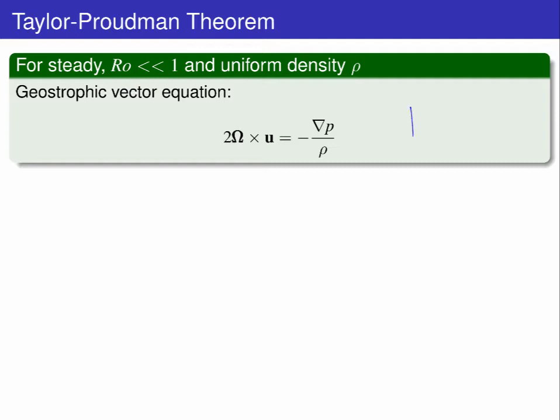Consider the flow to be rotating such that the Rossby number, u on 2 omega l, is small, and that the fluid is of uniform density, rho.